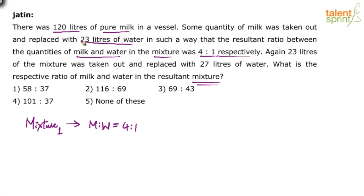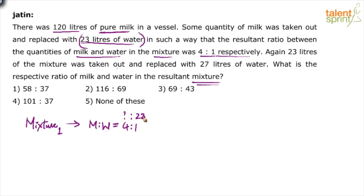The ratio of milk to water — the only amount of water that we have is 23 liters. 23 liters of water was added to pure milk. Some milk was removed and then 23 liters of water was added, and then the resultant ratio between milk and water came out to be 4 is to 1. So can I say this one part corresponds to 23? The quantity of water that was added is 23 liters, which is 1 part.